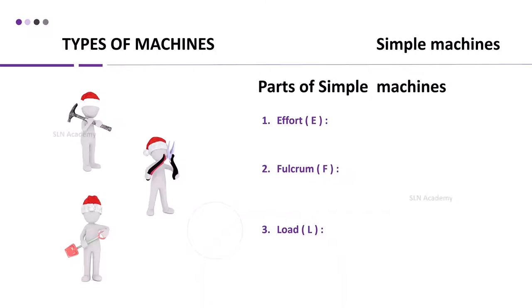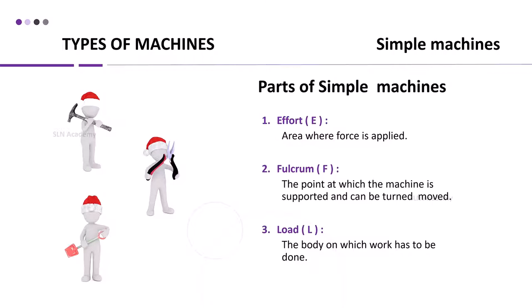These parts do not move on their own. They need external force to move. Effort is the area where force is applied. Fulcrum is the fixed point at which the machine is supported and can be turned or moved. Load is the body on which work has to be done.